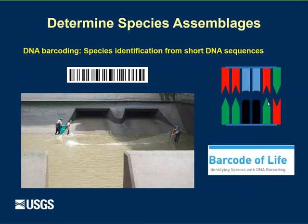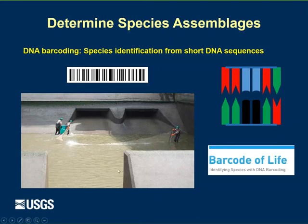Another potential use for eDNA is determining species assemblages. Just like a 2D barcode encodes information, we have instruments that read the DNA and inform us of the sequence, which we compare to known sequences to determine what fish are in the water — and can somewhat gauge relative abundance as well — mostly identifying what different species are present using DNA barcoding.